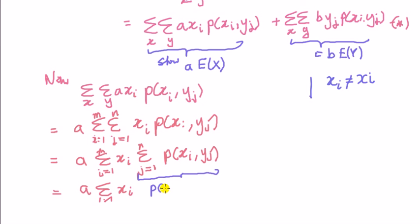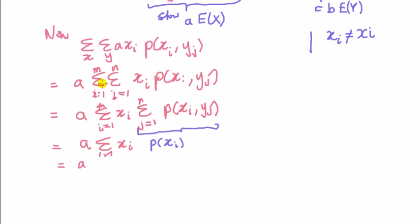And what this is equal to, again in another video I show you, is that this is equal to the marginal. In other words, this is equal to the marginal. And this gives us the result, because this is by definition, this whole thing is by definition, expected value of x.